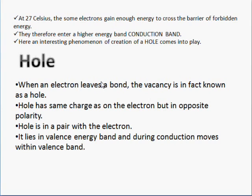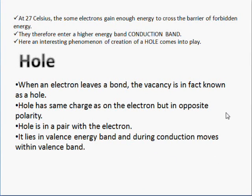When a covalent bond of a semiconductor atom is broken, an electron moves to the conduction band and essentially leaves behind a positive charge in the valence band — that is called a hole. The hole has the same quantity of charge as an electron but of opposite polarity, because when the electron leaves it leaves an equal amount of positive charge behind. Holes exist in electron-hole pairs, they lie in the valence energy band, and during conduction they move within the valence band.